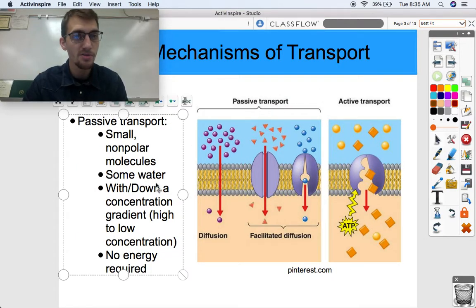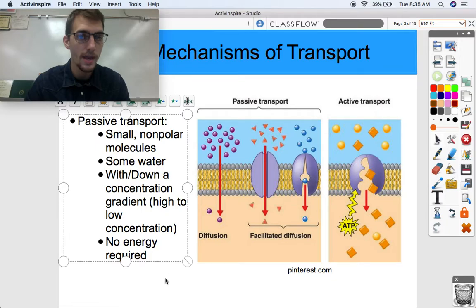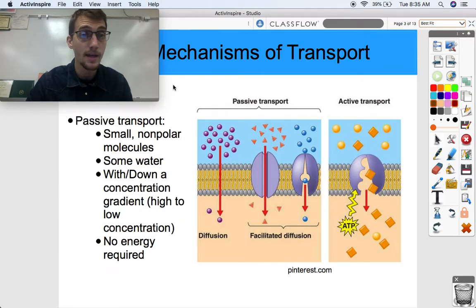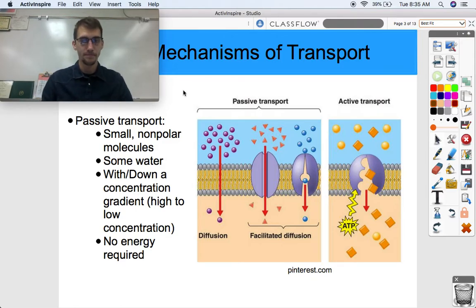As a reminder, passive transport deals with small nonpolar molecules, things like oxygen and carbon dioxide, molecules that are both small, maybe one or two atoms each, and they're nonpolar. Some water is able to move through passive transport or through diffusion through the bilayer, because the bilayer doesn't typically let polar molecules through, but water gets by in some amounts because it's so small.